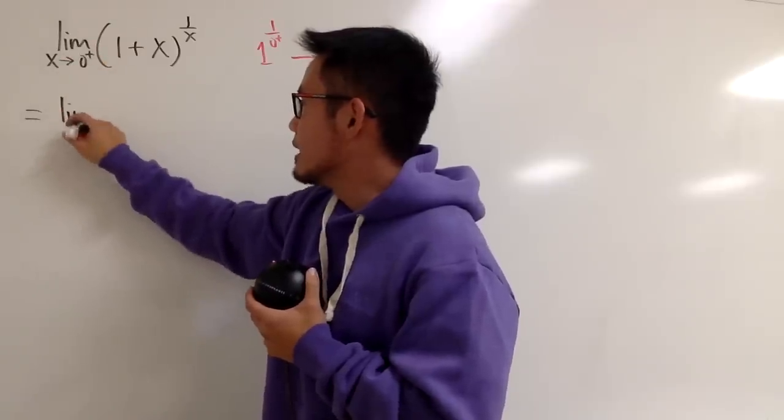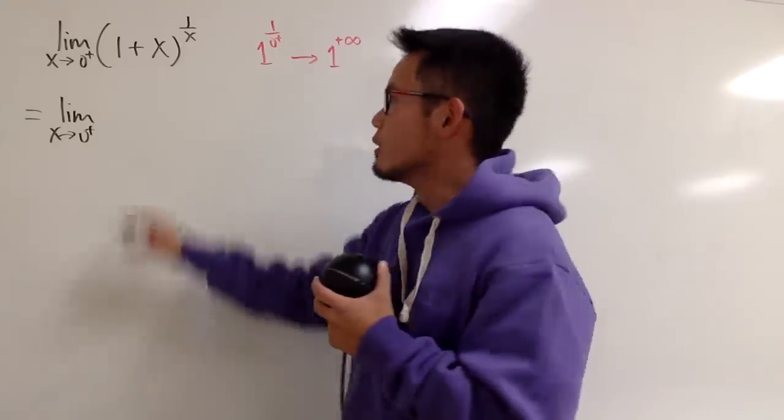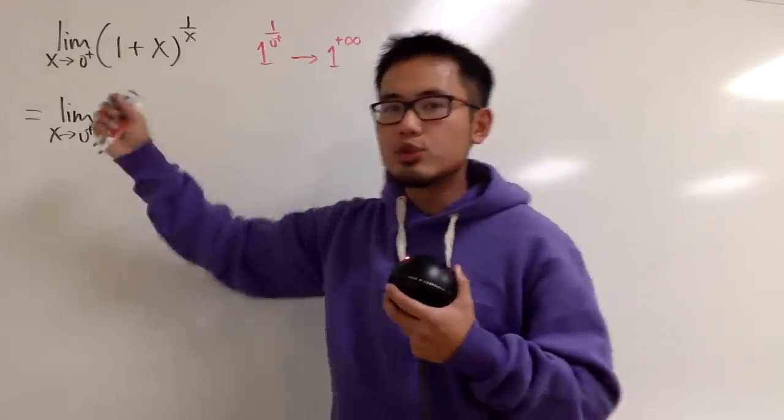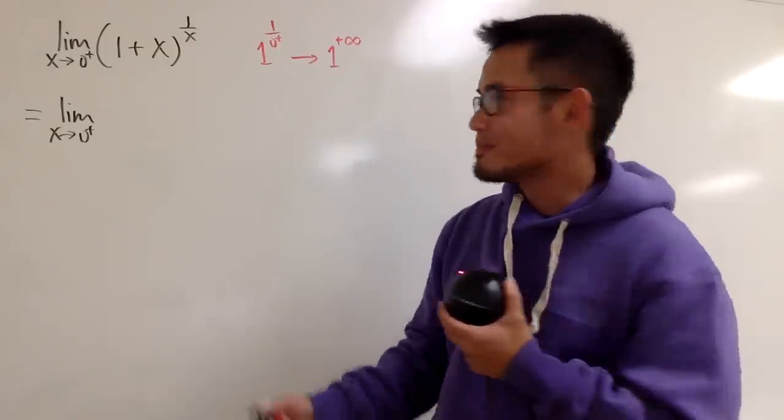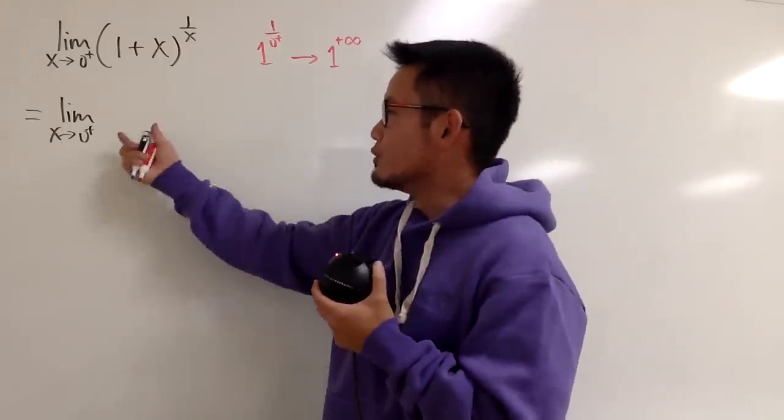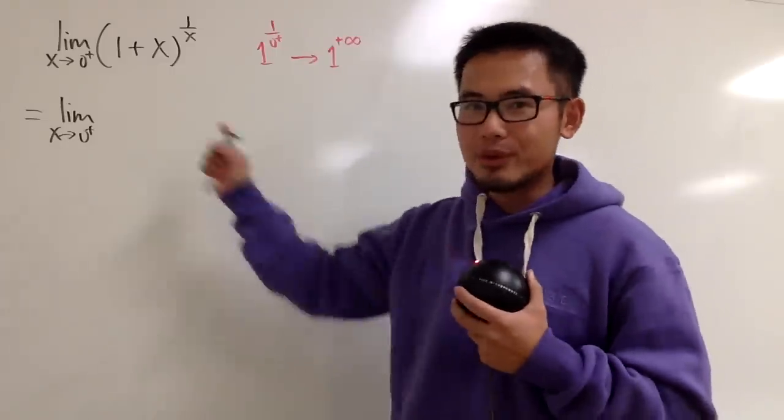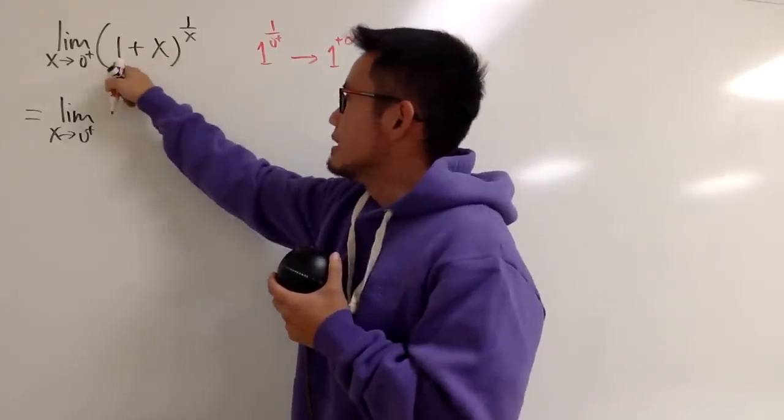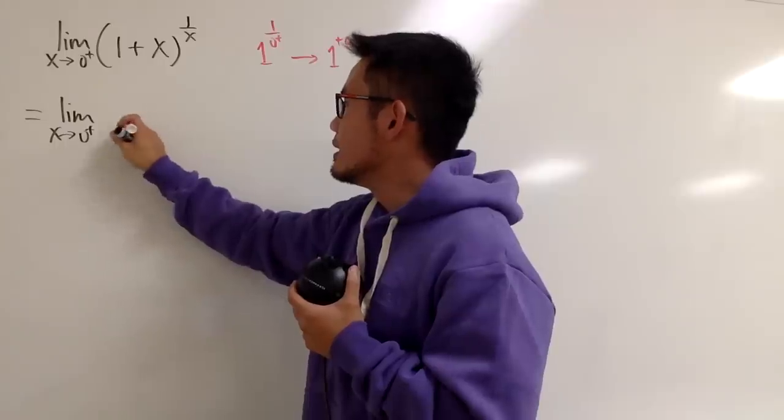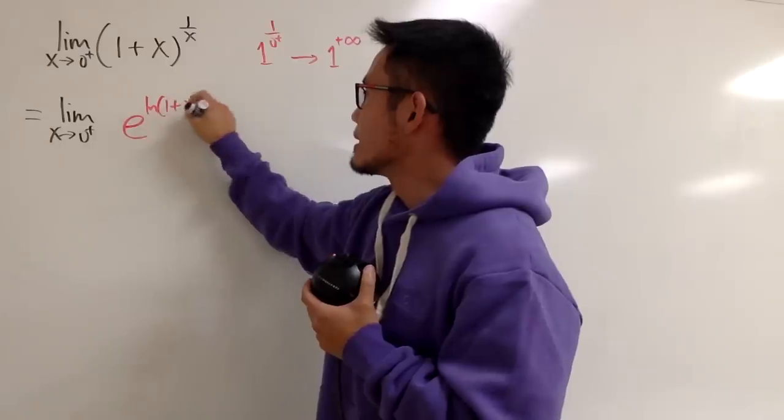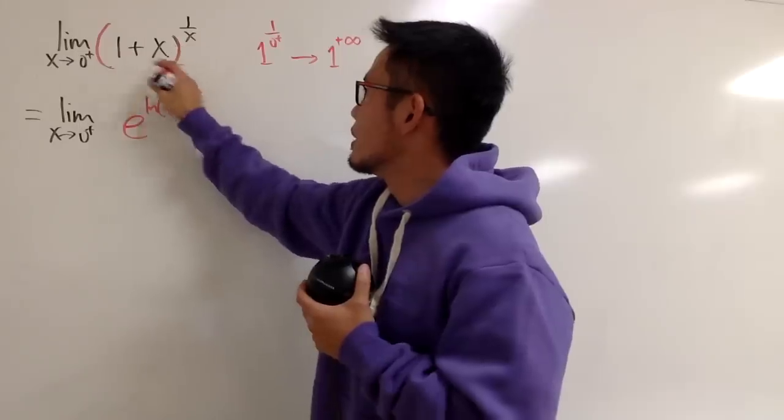I will write down the limit as x goes to 0 plus. And some people prefer to say this is equal to L, and take the natural log on both sides. And I think you have seen me do that a lot of times already. And some people also prefer to just write the base as e to ln power, right? I will do that for you guys right here. So the deal is that, you see the base is 1 plus x. I will change that to e raised to the ln of (1+x), right? Because that is the same as the original.